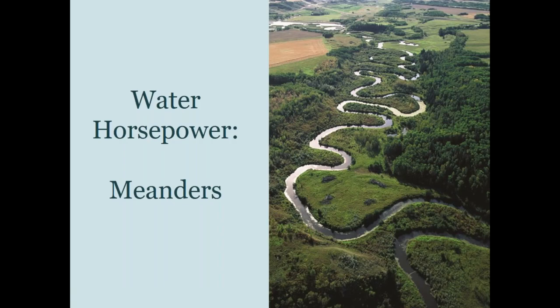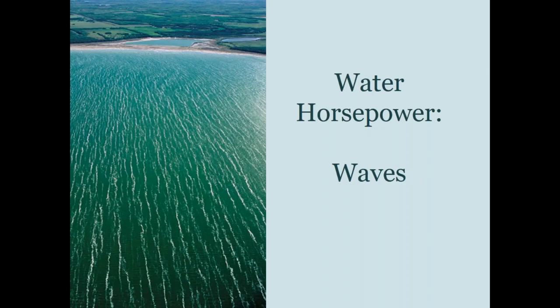Stream and river channels are seldom straight. In an effort to balance the water speed, valley slope, and the amount of sediment that can be transported, streams naturally meander or curve. Shorelines are also impacted by water in motion — wind and ice action create the potential for erosion. The greater the wind, the greater the wave height, length, and velocity, thus increasing the potential for erosion.